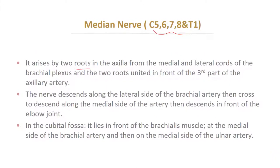The median nerve also arises from all roots of the brachial plexus. It arises by two roots in the axilla from the medial and lateral cords of the brachial plexus, and the two roots unite in front of the third part of the axillary artery. The nerve runs along the lateral side of the brachial artery, then crosses to descend along the medial side of the artery, then descends in front of the elbow joint. In the cubital fossa, it lies medial to the brachial artery and passes on the medial side of the ulnar artery.